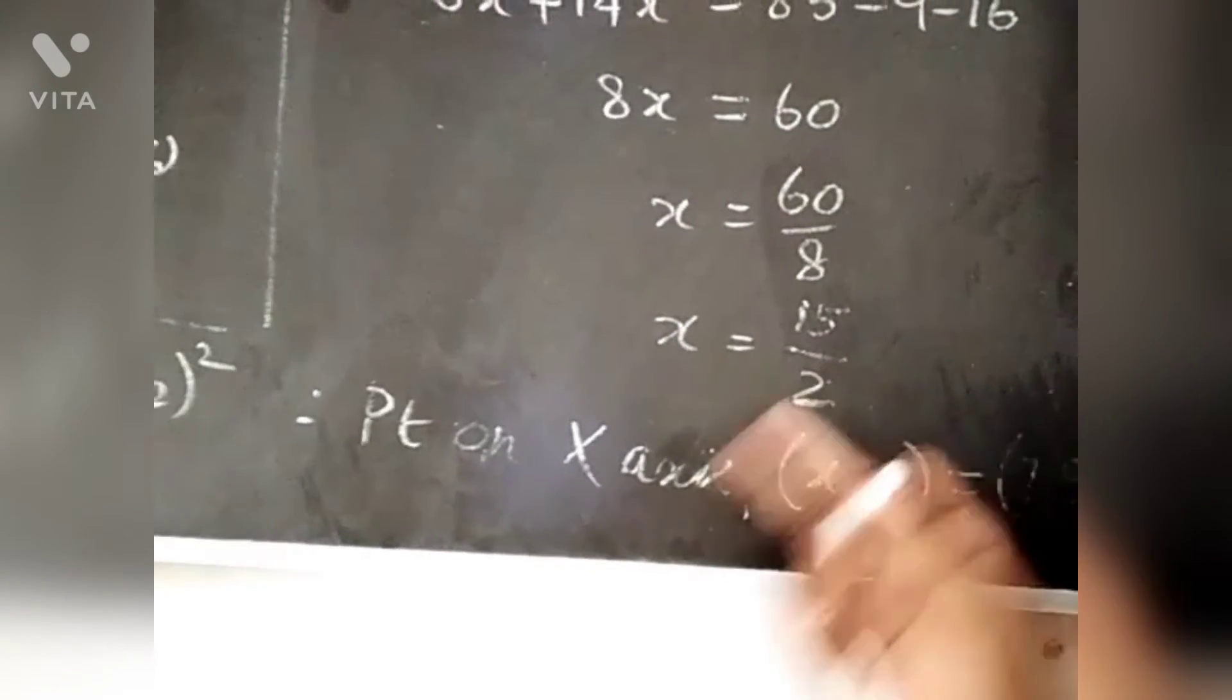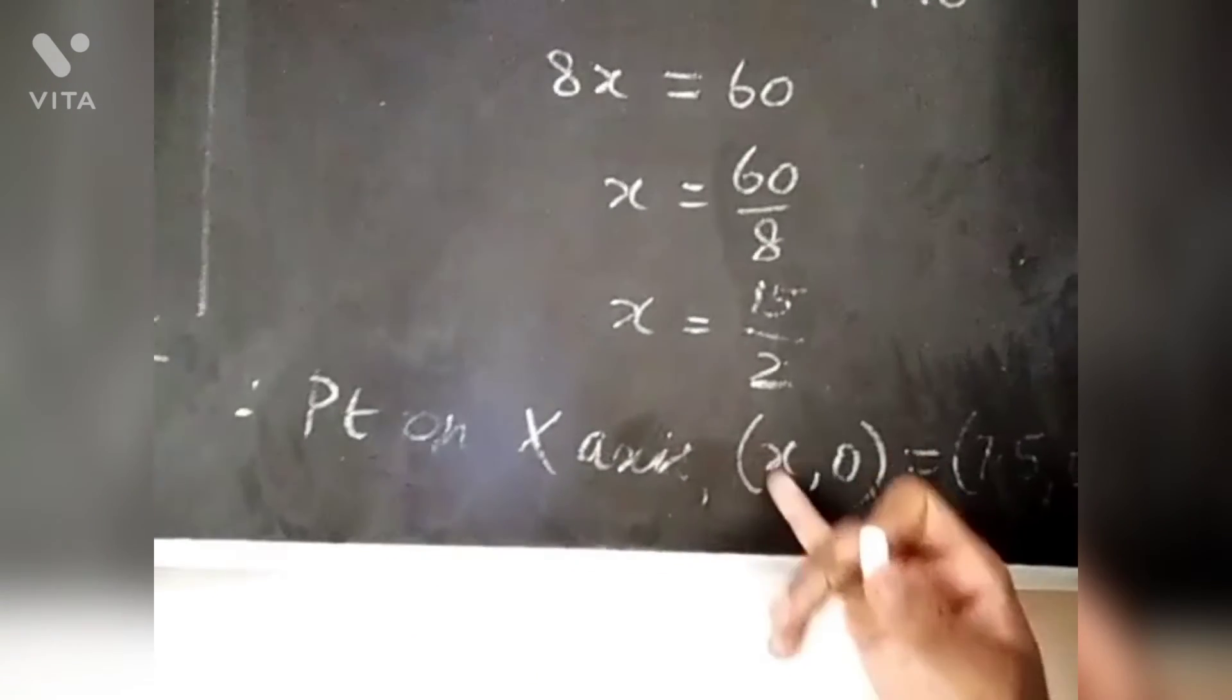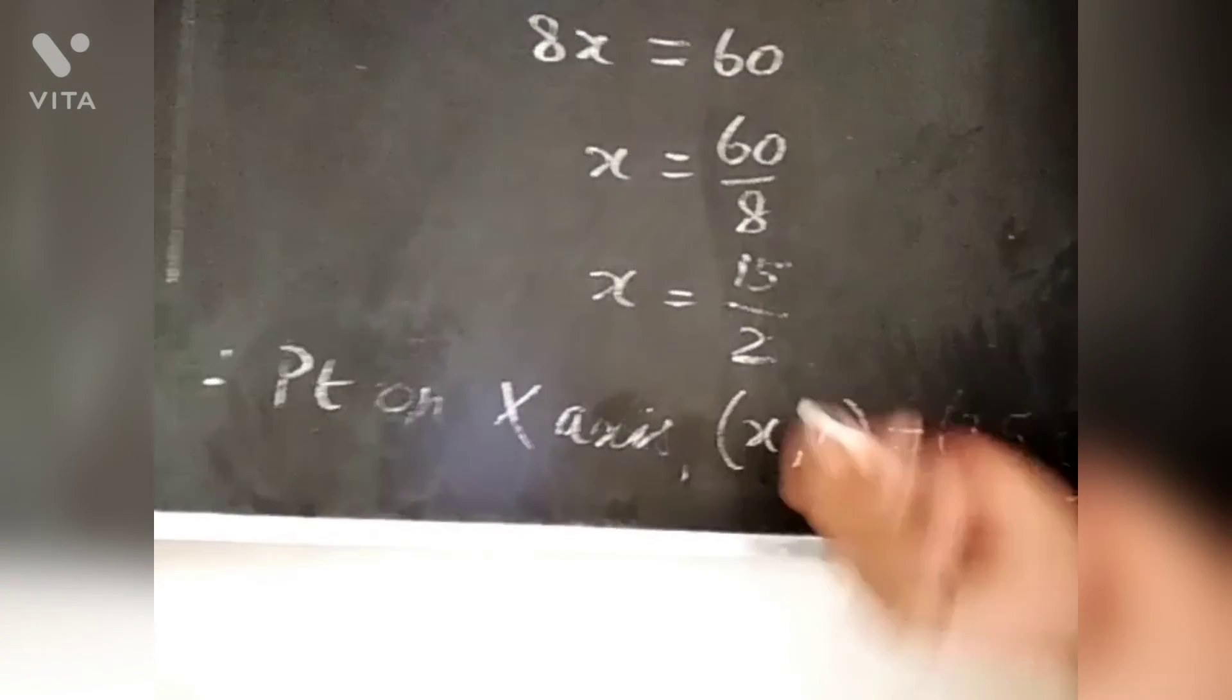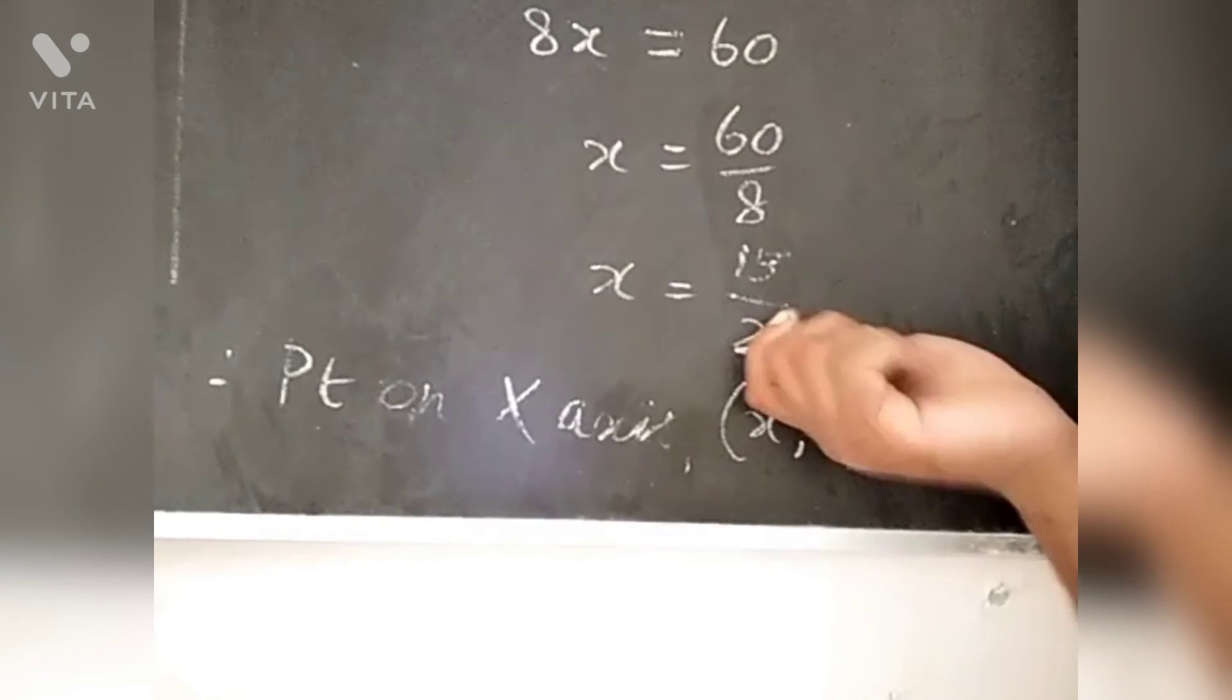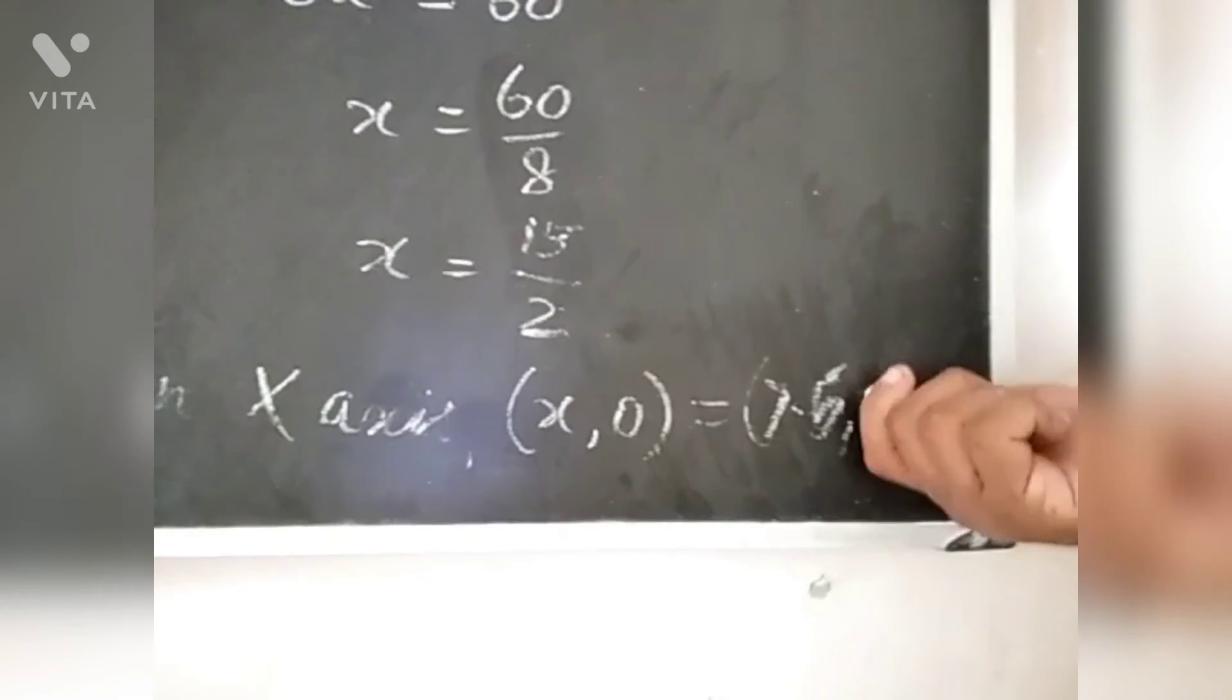Finally we have to find the point on x axis. Small x is 15 by 2 which is 7.5. So the answer is (7.5, 0).